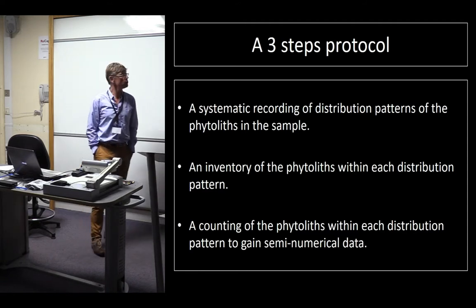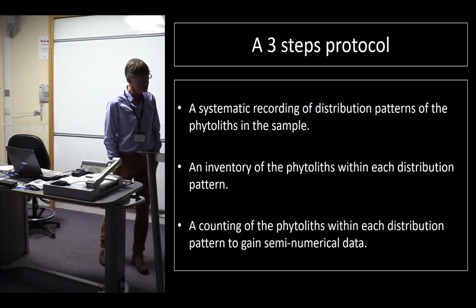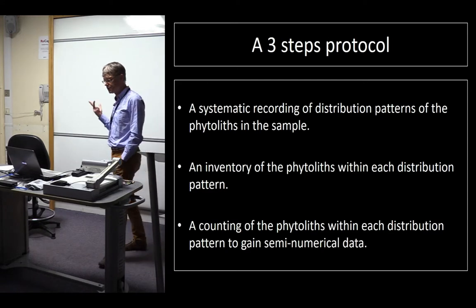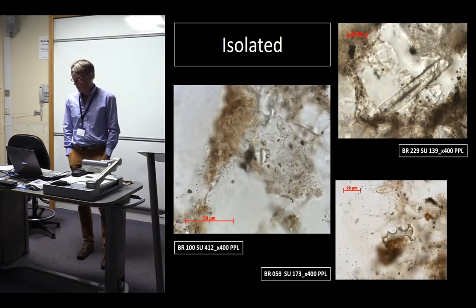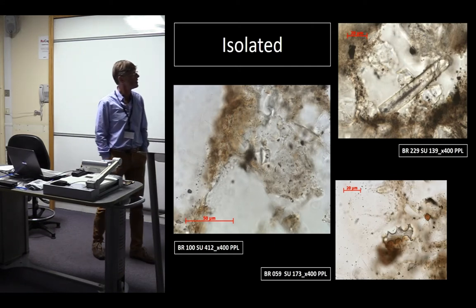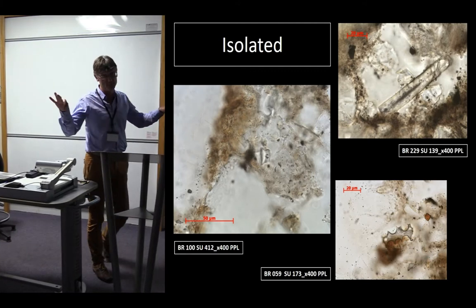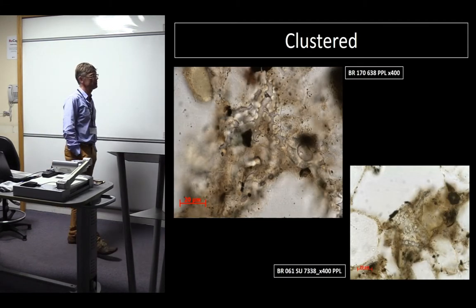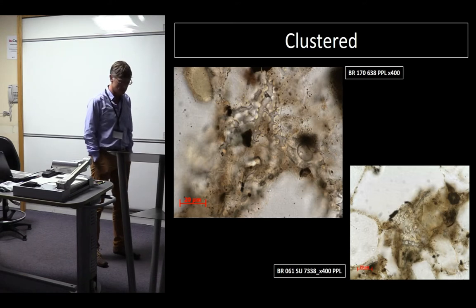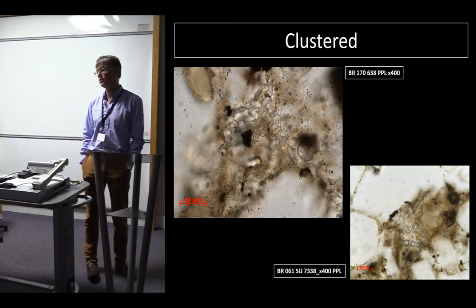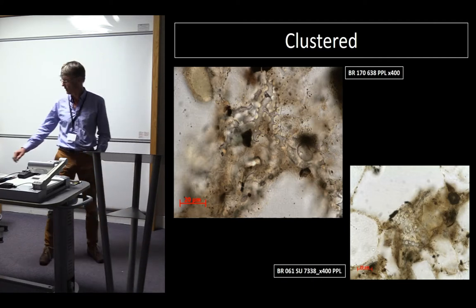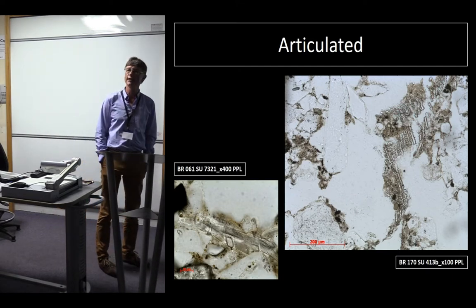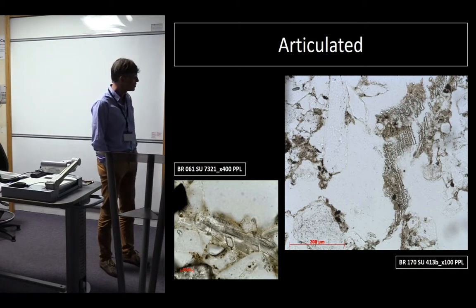Within the soil matrix of the dark earth units, we recorded three basic distribution patterns for phytoliths. They are either isolated, clustered, or articulated. Isolated phytoliths are totally disarticulated and quite widespread in thin sections. Clustered phytoliths are a group of disarticulated phytoliths — not always the same type and not always sharing the same orientation. As for the articulated ones, these maintain the relative distributions they had within the plant tissues in which they were produced.